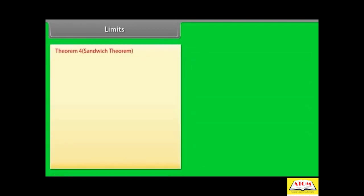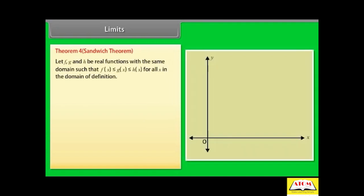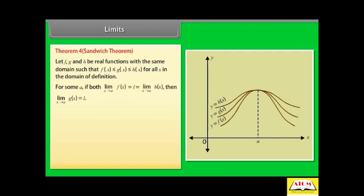Theorem 4: Sandwich Theorem. Let f, g, and h be real functions with the same domain such that f(x) ≤ g(x) ≤ h(x) for all x in the domain. For some a, if limit x→a of f(x) = l = limit x→a of h(x), then limit x→a of g(x) = l.